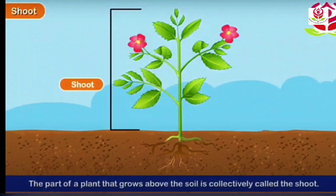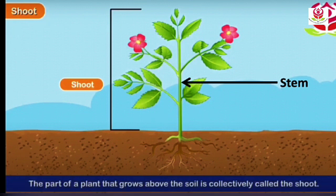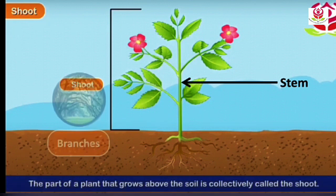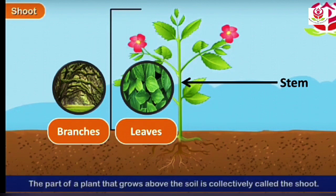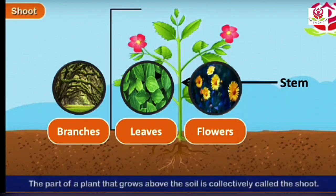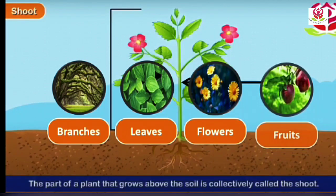Next is the shoot. The part of a plant that grows above the soil is collectively called the shoot, which you can see on the screen. The shoot consists of the stem of the plant, which bears branches, leaves, flowers, and fruits.